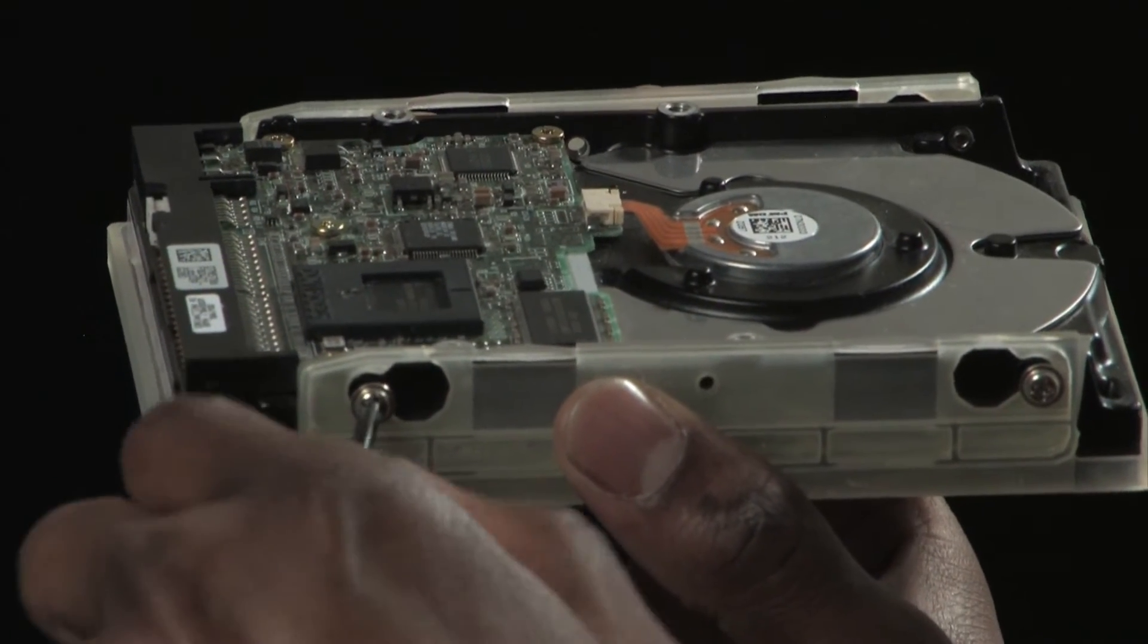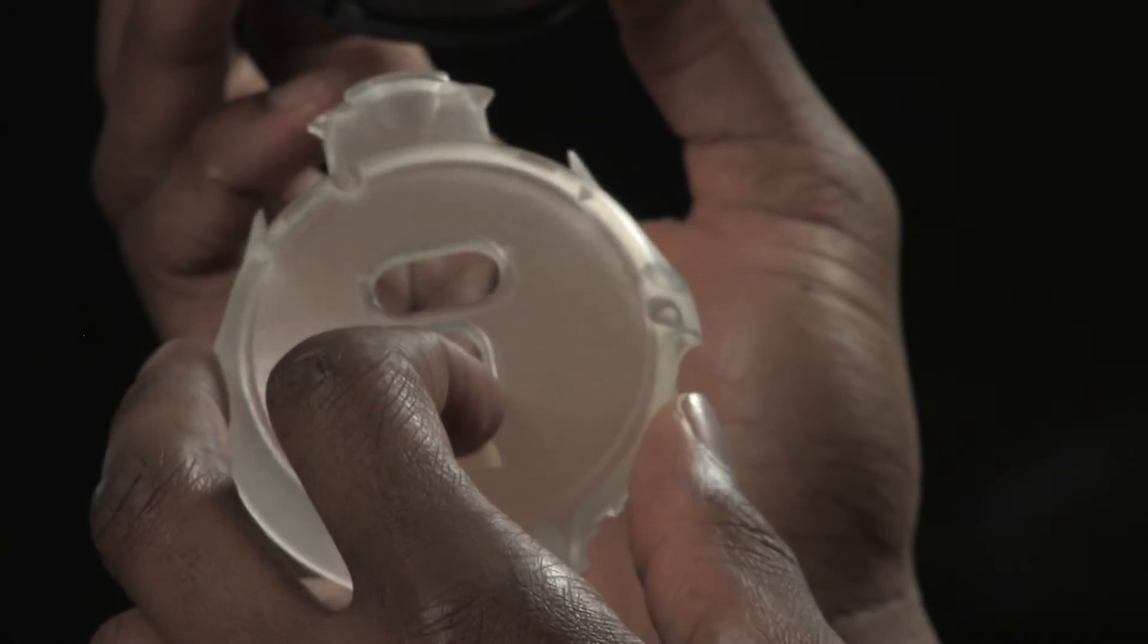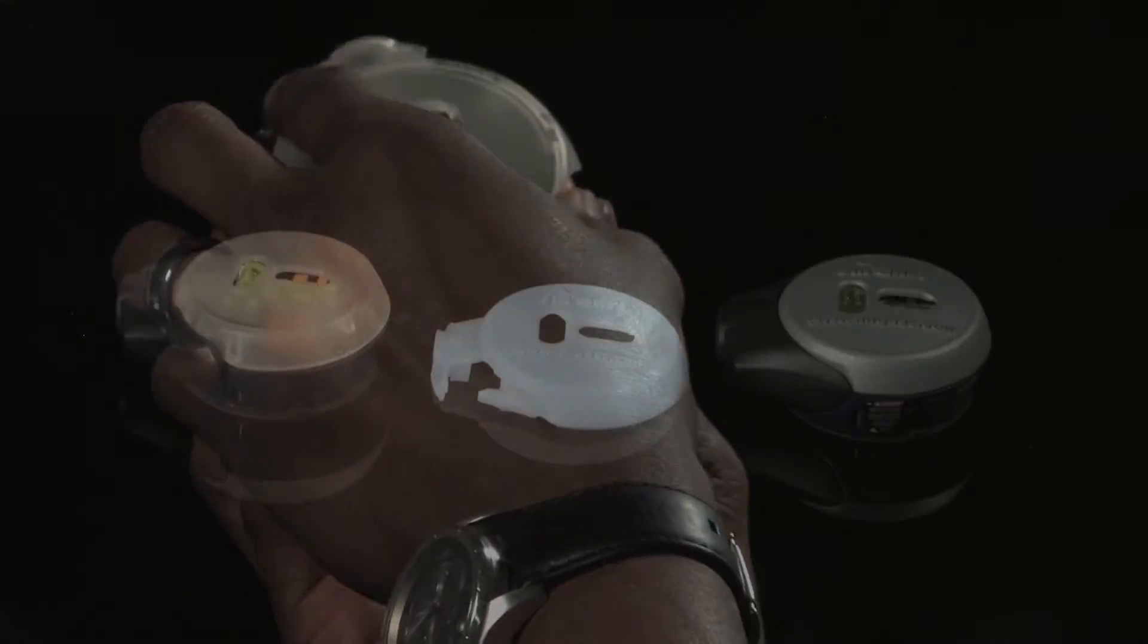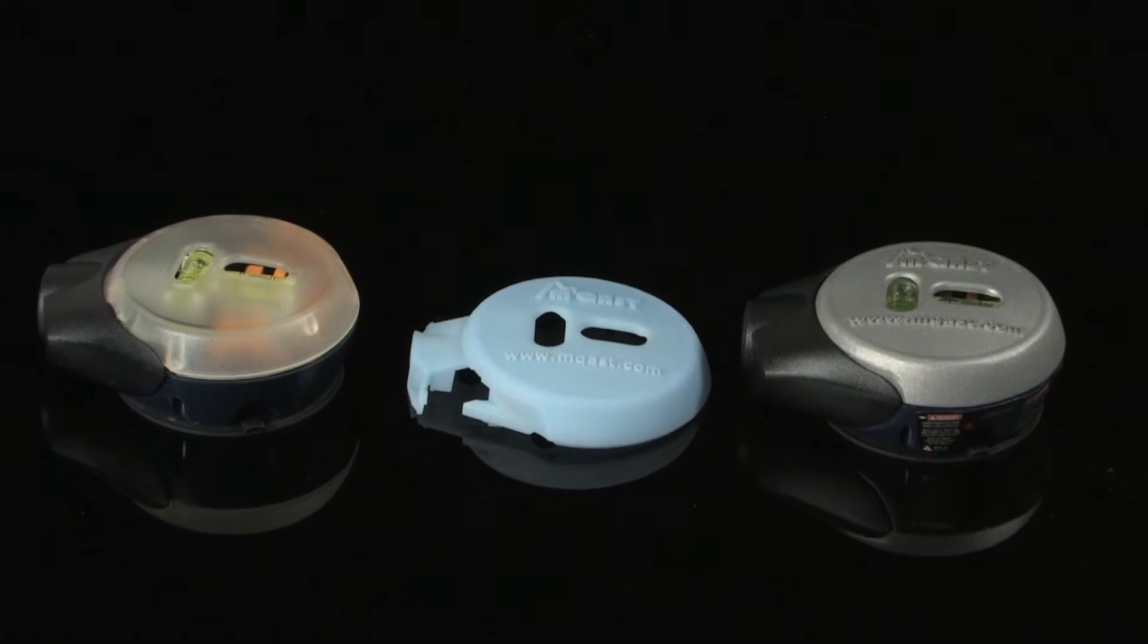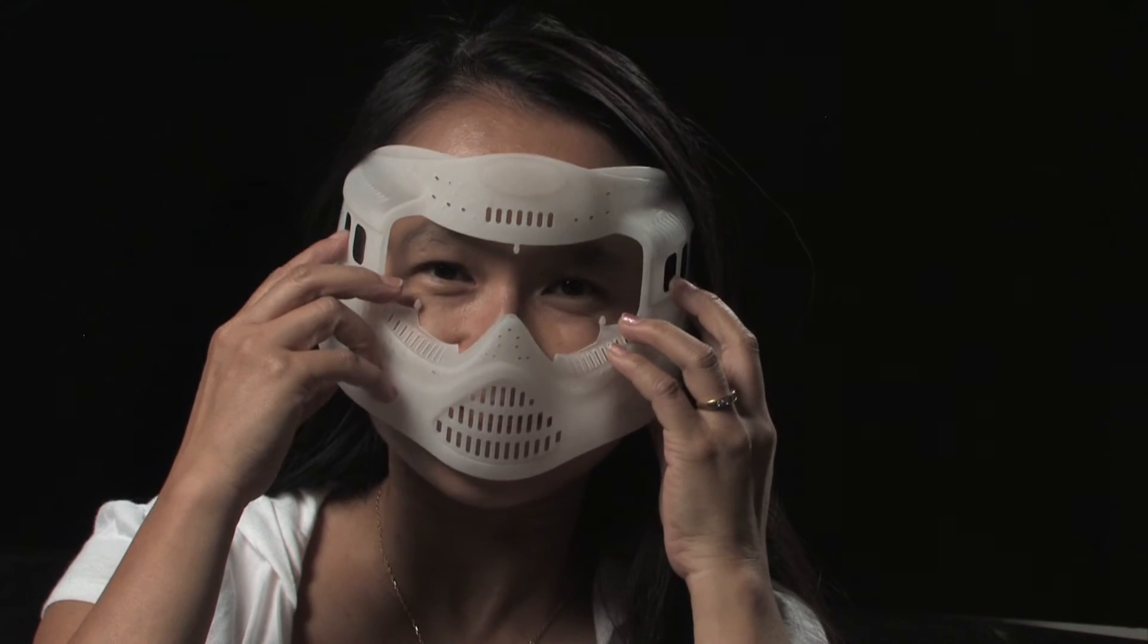Tough plastic parts can be printed for design verification, functional testing, and end-use application. Save money and time by testing assembly fit and function to quickly identify design revisions early, saving costly rework later in the development cycle.